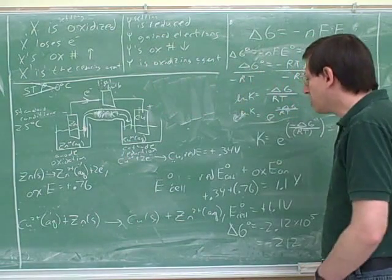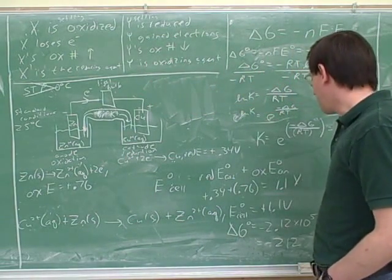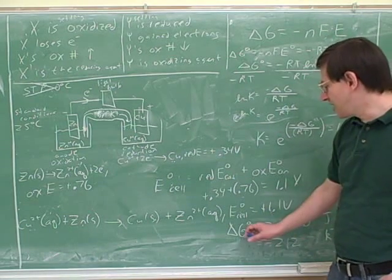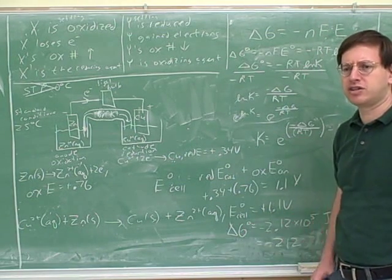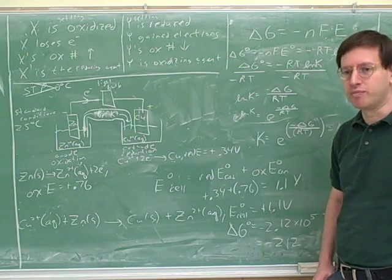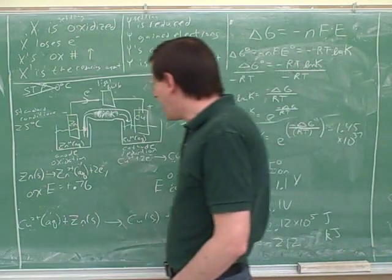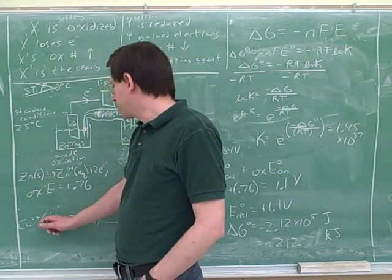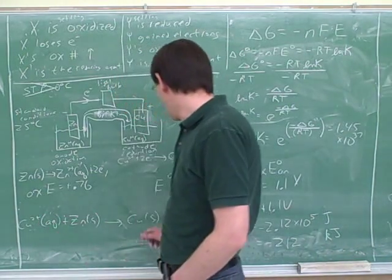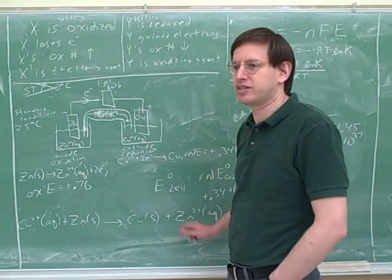So another question they might ask is, what we've really done here is we figured out what the delta G would be at standard concentrations. Do you remember what are the standard concentrations? One molar. So this is telling us what the delta G would be if we start with one molar concentration of copper 2+ and one molar concentration of zinc 2+.